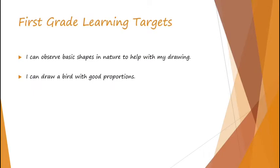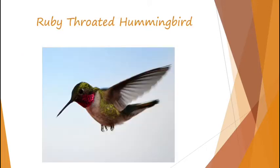Your learning targets: I can observe basic shapes in nature to help with my drawing, and I can draw a bird with good proportions. You guys are going to be drawing a bird today called the ruby-throated hummingbird. I'll bet you could figure out why he's called the ruby-throated hummingbird. Because he's got all that red on his neck. Good job.